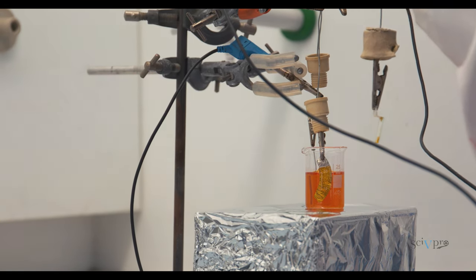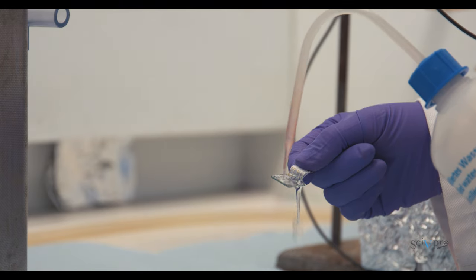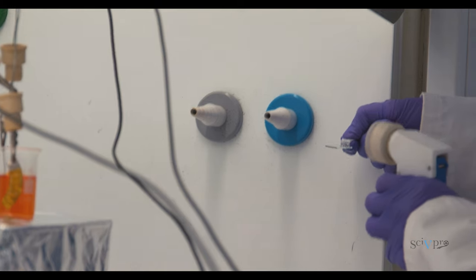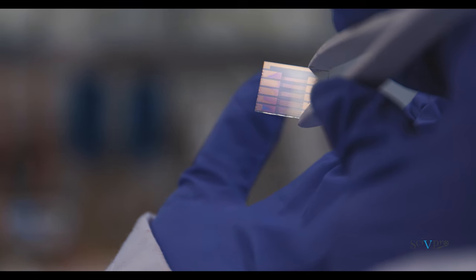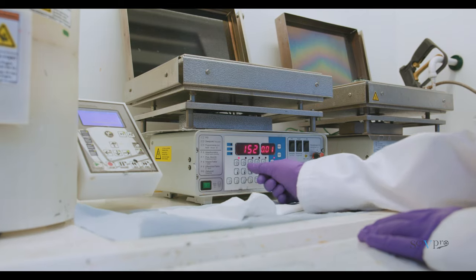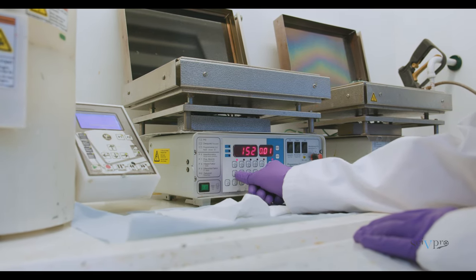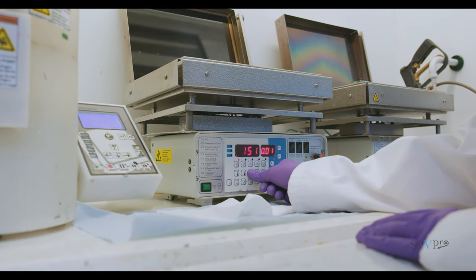Once the deposition is completed, rinse the substrate with water and ethanol, then dry it with nitrogen stream. Inspect the substrate and make sure the deposited titanium dioxide is uniform across the substrate. Anneal the substrate at 300 degrees for 1 hour under ambient conditions.